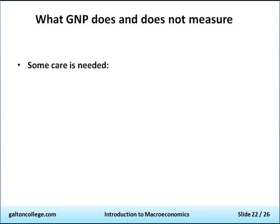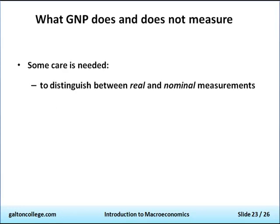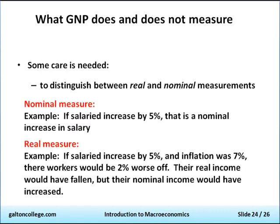GNP doesn't measure some things, so we have to be careful. We need to distinguish between real and nominal measures. A nominal measure — consider salaries as an example. Let's say salaries increased by 5%; that's a nominal increase. However, if salaries increased by 5% and inflation was 7%, the workers would be worse off by 2% — prices have gone up by 7%, they've received an extra 5%, so their real income would have fallen, but their nominal income would have gone up by 5%. So there is a difference between real and nominal.